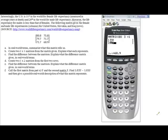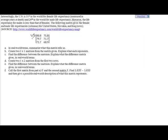In this problem, we first off would like to interpret in real world terms what this matrix tells us. We're told that this gives the female and male life expectancies, which are the columns for United States, Slovakia, and Iraq rows. So basically we're saying here is the US, this row represents Slovakia, and this row represents Iraq.